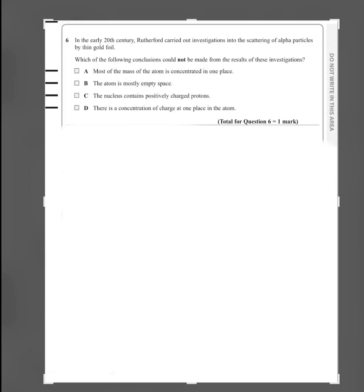Question 6: In the early 20th century, Rutherford investigated the scattering of alpha particles by thin gold foil. Which conclusion could NOT be made? A — most mass is concentrated in one place: correct, since alpha particles were deflected at large angles. B — atom is mostly empty space: correct, since most particles passed straight through. C — nucleus contains positively charged protons: this is the answer, since that conclusion was not the purpose of that experiment. D — there is a concentration of charge at one place: also correct.